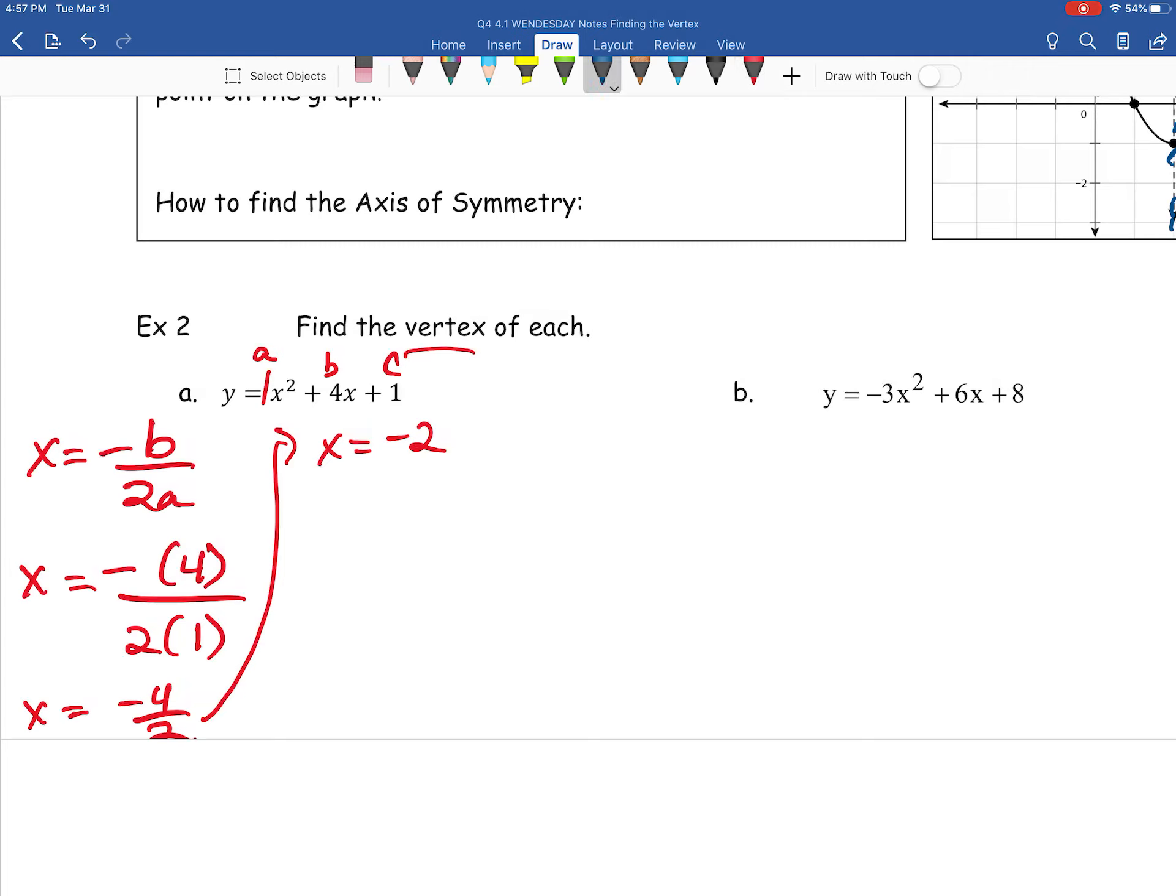Now, we're going to go ahead and take that x value and plug it in to figure out what is our y. We're going to plug that anywhere that there is an x value inside of our quadratic. We don't yet know what y is. But it's equal to 1 times our x that we just found, negative 2 squared, plus 4 times negative 2 plus 1. And then, simplifying this up, we have y equals 1 times negative 2 squared is 4.